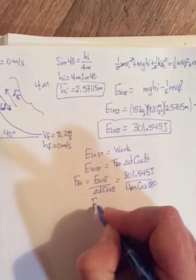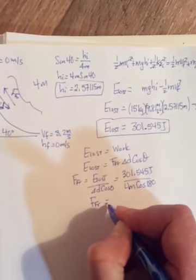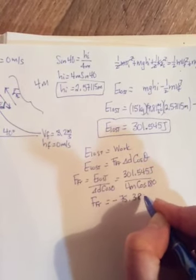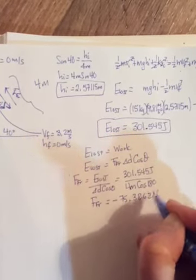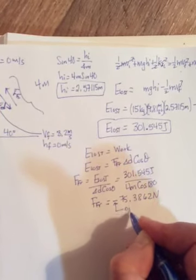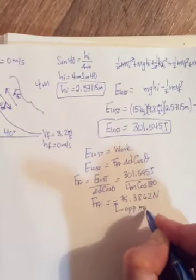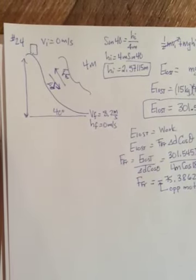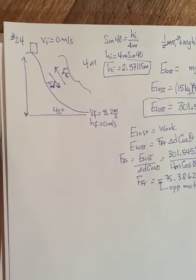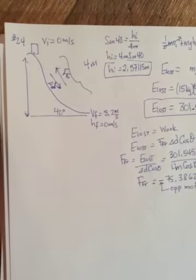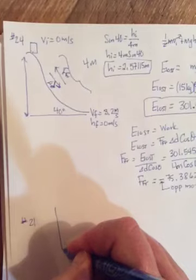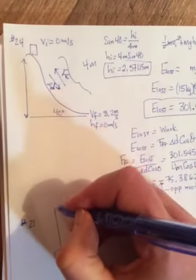Okay? And when you do this, you get friction to equal negative 75.3862 newtons. Where once again, the negative means opposite motion. Okay? So that's number 24. And then I gave you one other. It was over on page 329. Number 21. I went back to a pendulum one just because I thought maybe you might need more practice.